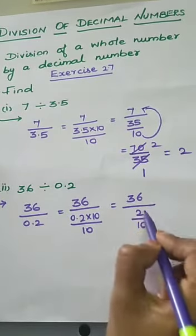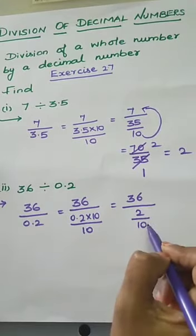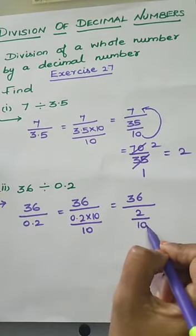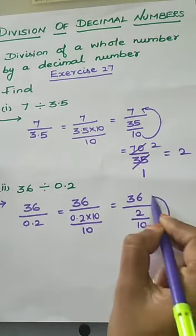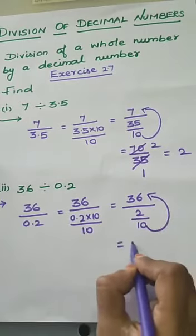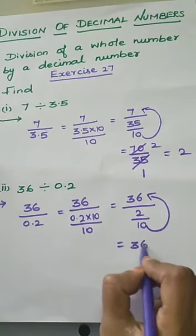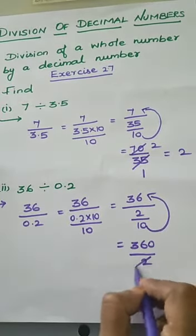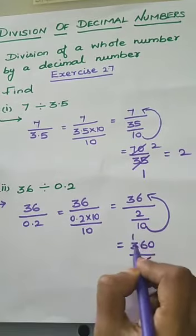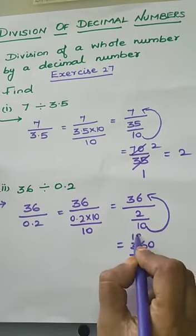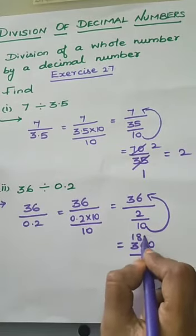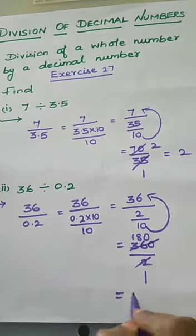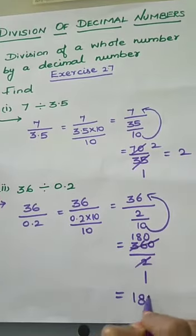Now division of a whole number: the denominator value 10 moves to the numerator, so we write 360 by 2. 2 ones are 2, balance 1; 2 eights are 16, take the value 0. So the answer is 180.